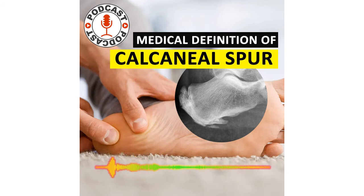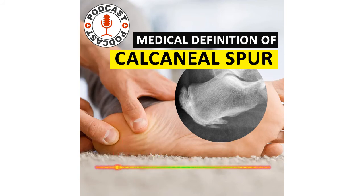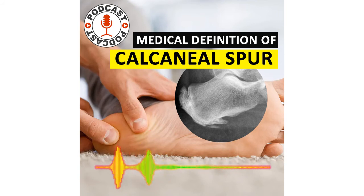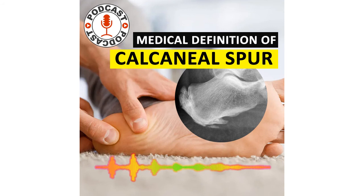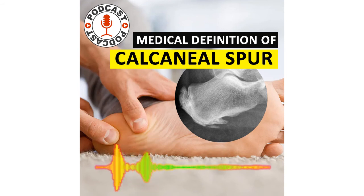Treatment is designed to decrease the inflammation and avoid re-injury. Heel lifts reduce stress on the Achilles tendon and relieve painful spurs at the back of the heel. Donut-shaped shoe inserts take pressure off plantar spurs. Infrequently, surgery is done on chronically inflamed spurs.